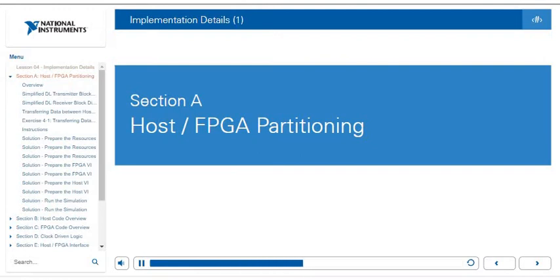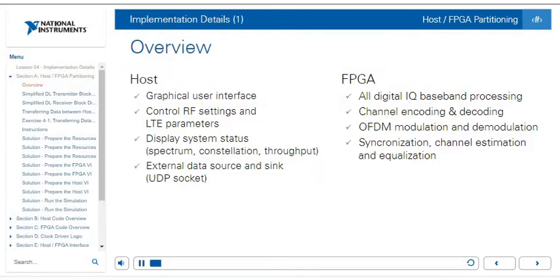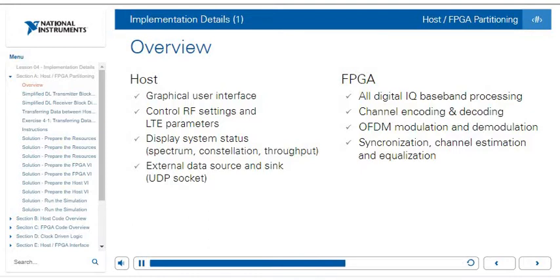In section A, we will cover the partitioning between the host and the FPGA code. At an overview level, these are the types of functionalities implemented on the host versus what is implemented on the FPGA. The host and FPGA have different processing limitations, and we are very deliberate about what we use on the FPGA to leverage its real-time capabilities. The host code will have our graphical user interface, enable us to control RF settings and LTE parameters, display system statuses such as spectrum, constellation, and throughput, and communicate with external data sources via a UDP socket.